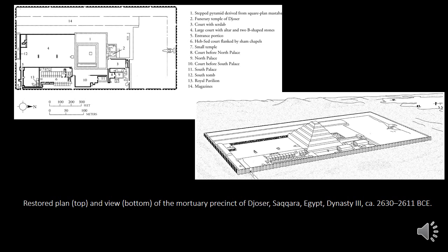If the gods deem you worthy, you have to be able to support yourself — you need your body to be reanimated in the afterlife. All of the things you need in this world — water, wine, food, clothing — you also need in the afterlife. It's a very interesting idea of the continuity of existence. Whatever your role is in the earthly realm, whether you're a farmer, a builder, or a pharaoh, that's going to be your role in the afterlife as well. So you need all the things you need in this realm in the next realm too.